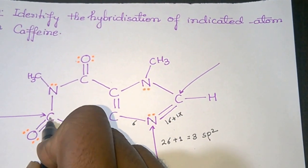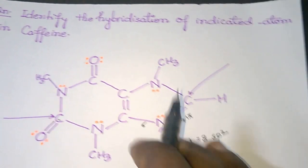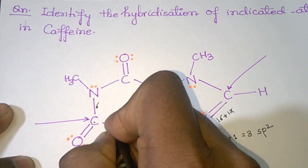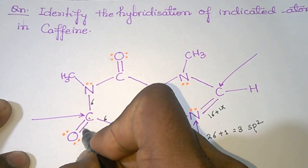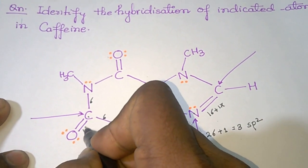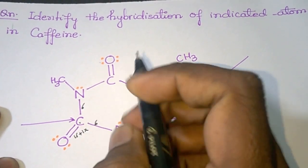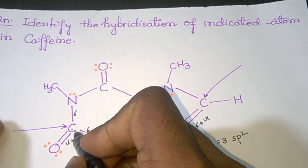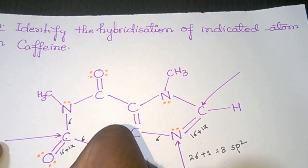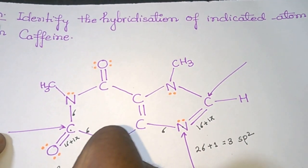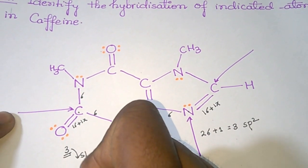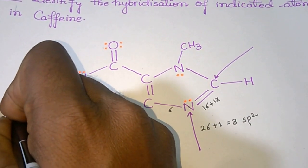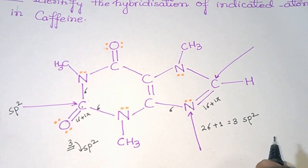Next, this carbon. Carbon is forming 1 sigma bond here, another 1 sigma bond, and 1 sigma plus 1 pi and 1 pi bond. Carbon does not have any lone pair of electrons, so there are only 3 sigma bonds giving a steric number of 3, which makes it sp2 hybridized.